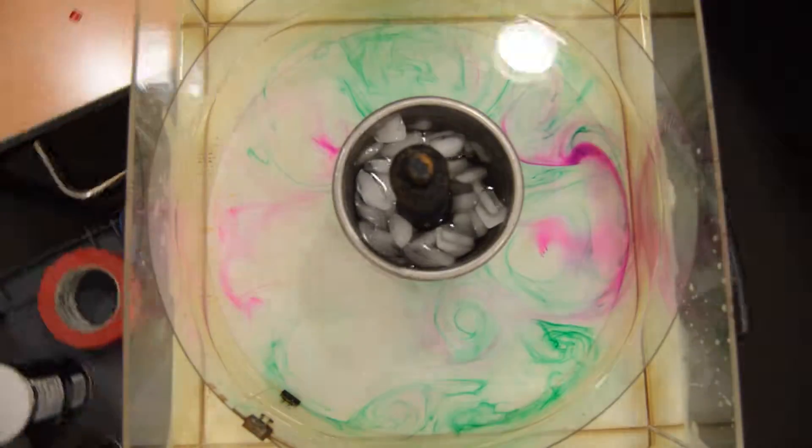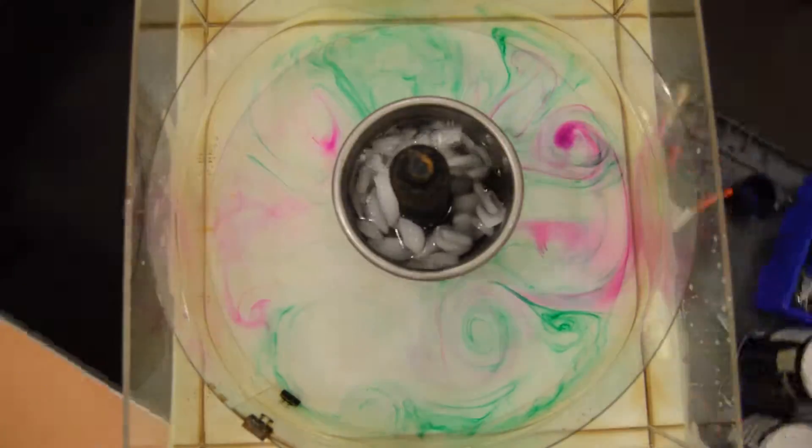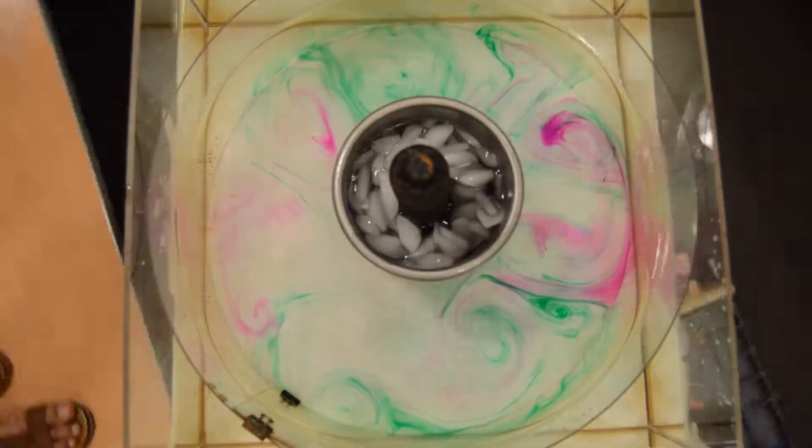In our tank, we've got a bunch of Eddies, but in a river, they're coupled. So why? Well, the difference between our tank and the river is the Rossby number.